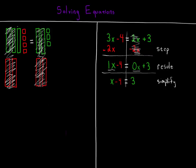Which means our equation is better written as x minus 4 is equal to 3. And look at what's left in the model. We have 1x and negative 4 units on the left side, x minus 4, and positive 3 units on the right side, plus 3.